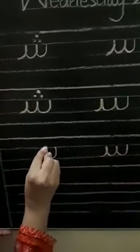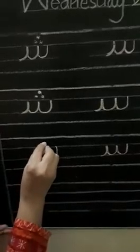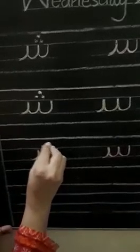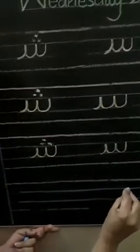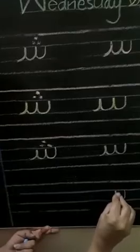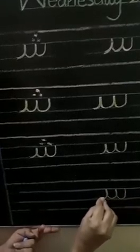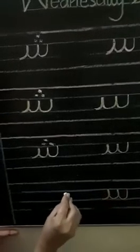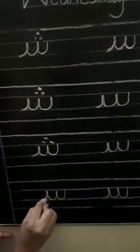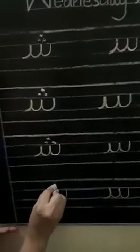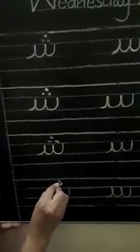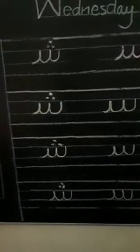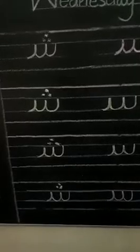Write again. Seen, Seen, Seen — S. Sheen — Sh. We will write Sheen with three candies. Seen — S. Sheen, Sheen. Sheen has three candies and Seen has no candy.